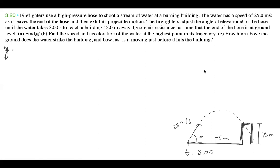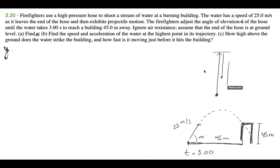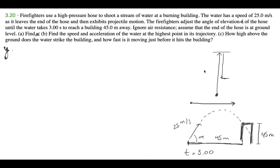In projectile motion, we start from some point on the ground, go all the way up until the final speed is zero, then turn and go back down picking up speed again. In this case, it stops at some point on the building. There's also a speed component in the X direction. We can break this down into three movements: up, down, and sideways.